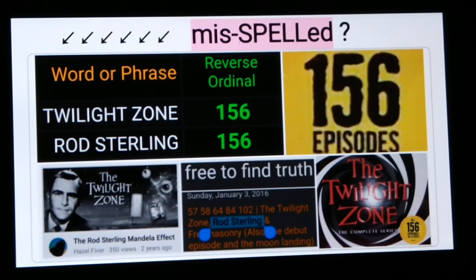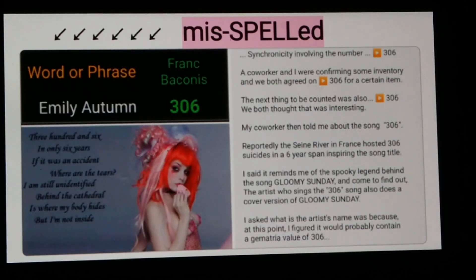Some people will nitpick and say that's a mistyping, it's supposed to be 'The Twilight Zone,' but I don't have time for those people. It's 156 episodes, Twilight Zone equals 156, and the misspelling 'Rod Sterling' equals 156.